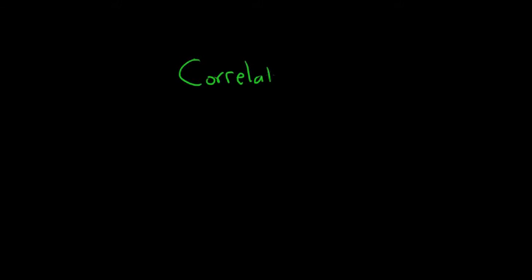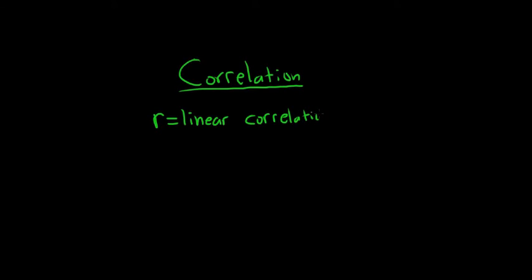Hi everyone. In this video we're going to talk briefly about correlation. There is a number that we'll be computing with the software called R, which stands for the Linear Correlation Coefficient. This is a number that's always between negative 1 and 1. The software will compute this for us, but let me explain what it is so you have a deeper understanding.